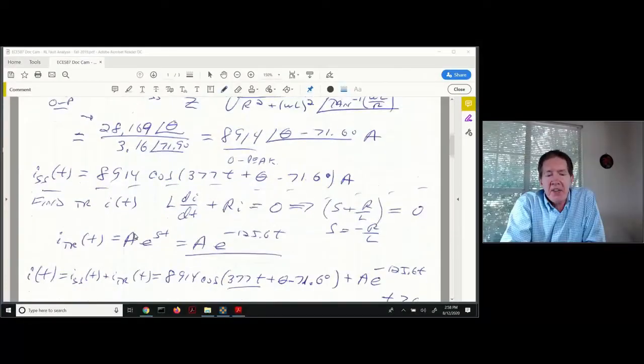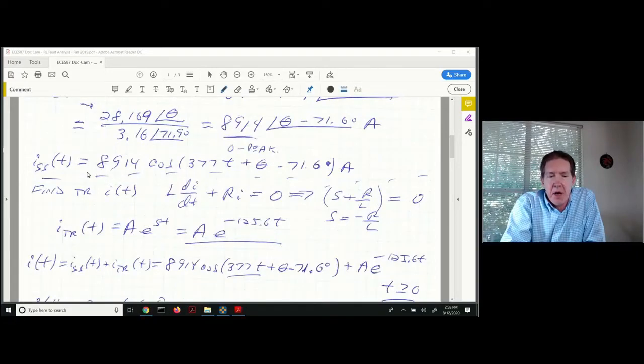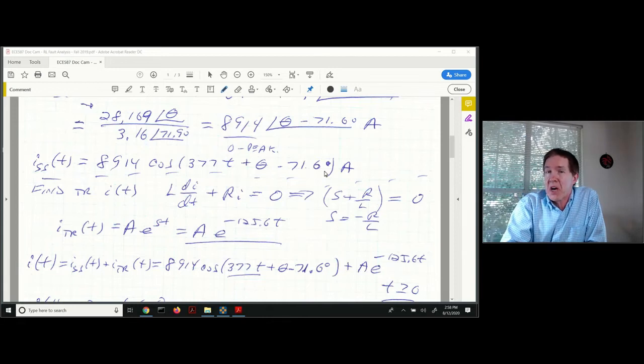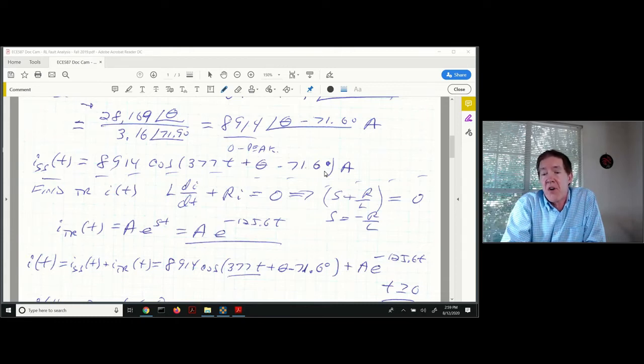When I convert this back into the time domain for steady state, it's 8,914 cosine with the argument of 377t plus theta minus 71.6 degrees. We haven't said what the point-of-wave is on yet, so we're leaving this as a general purpose result where we can plug in theta later on.